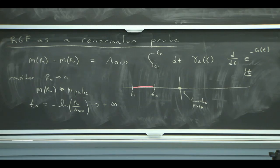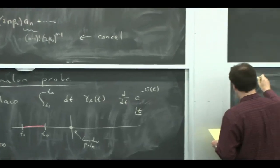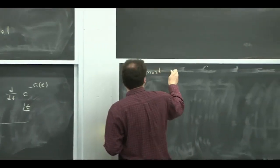So basically, you're taking your RGE and you're pushing it into a region where you're no longer completely perturbative, and that you're forced to continue by the Landau pole.